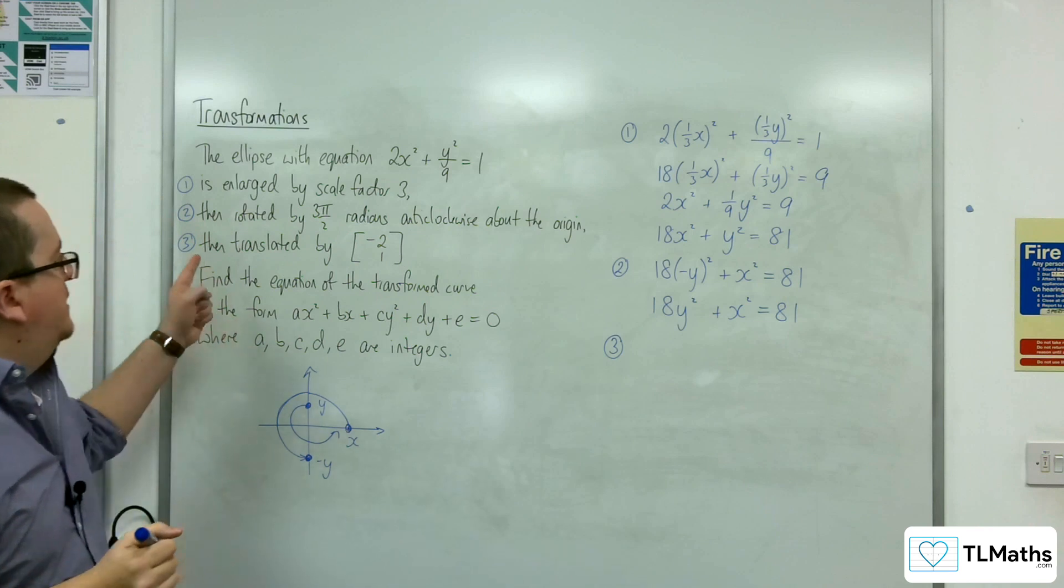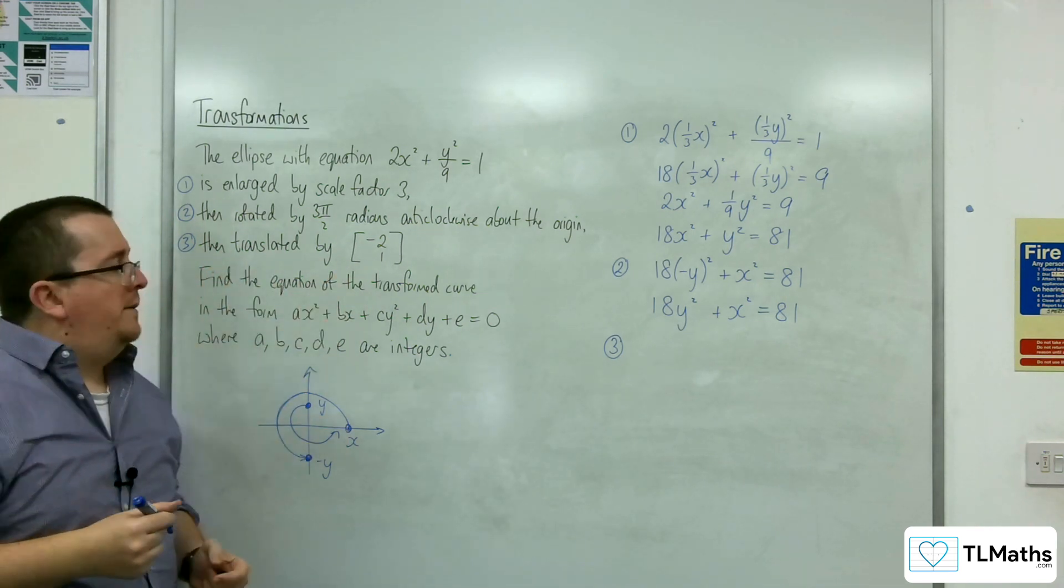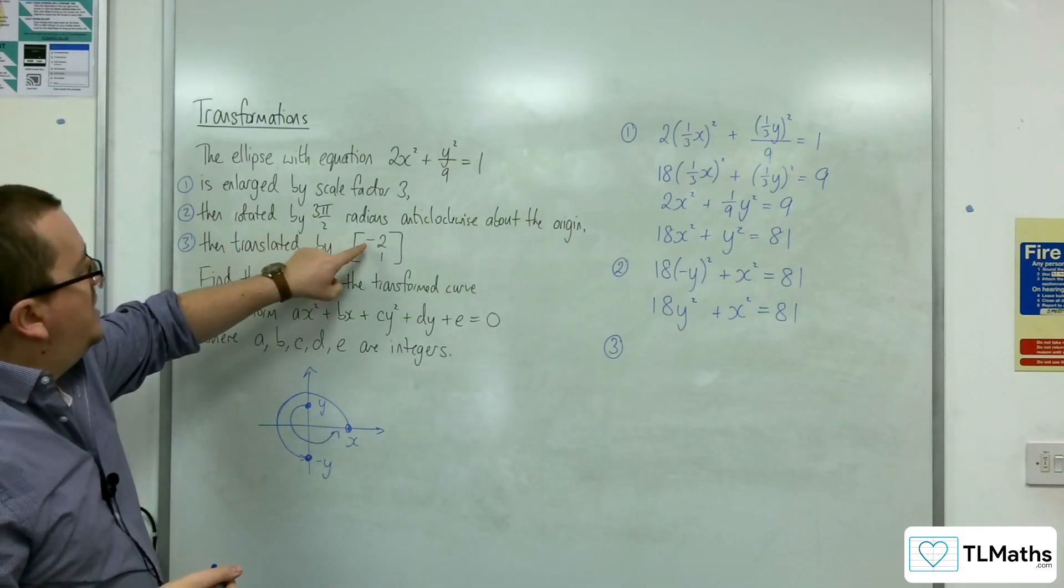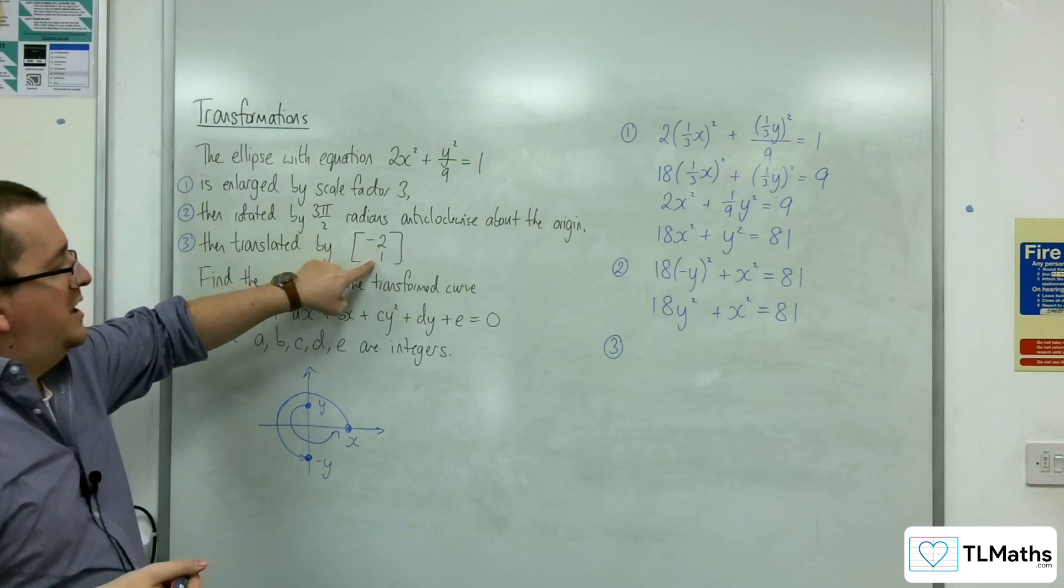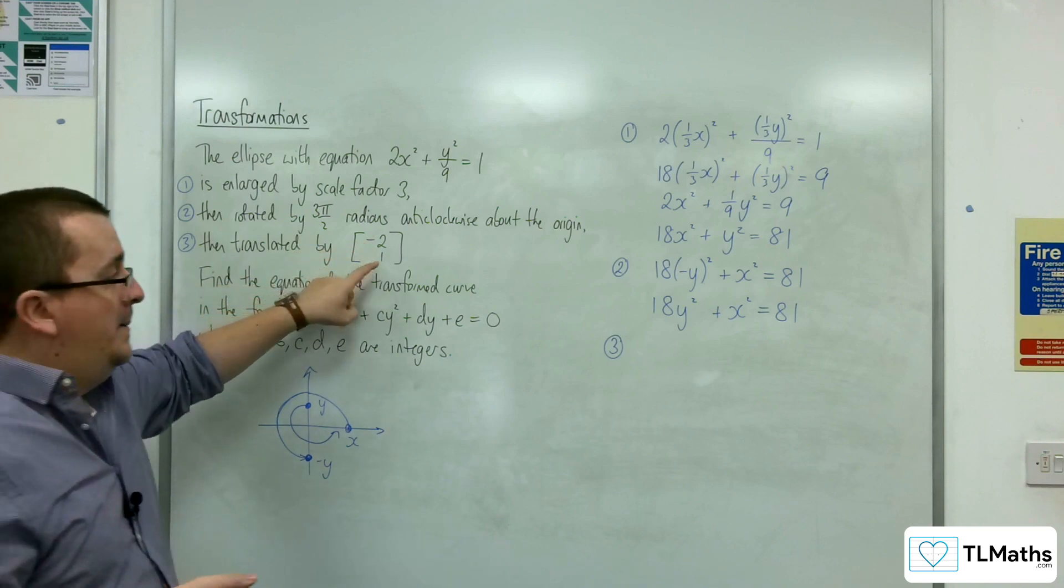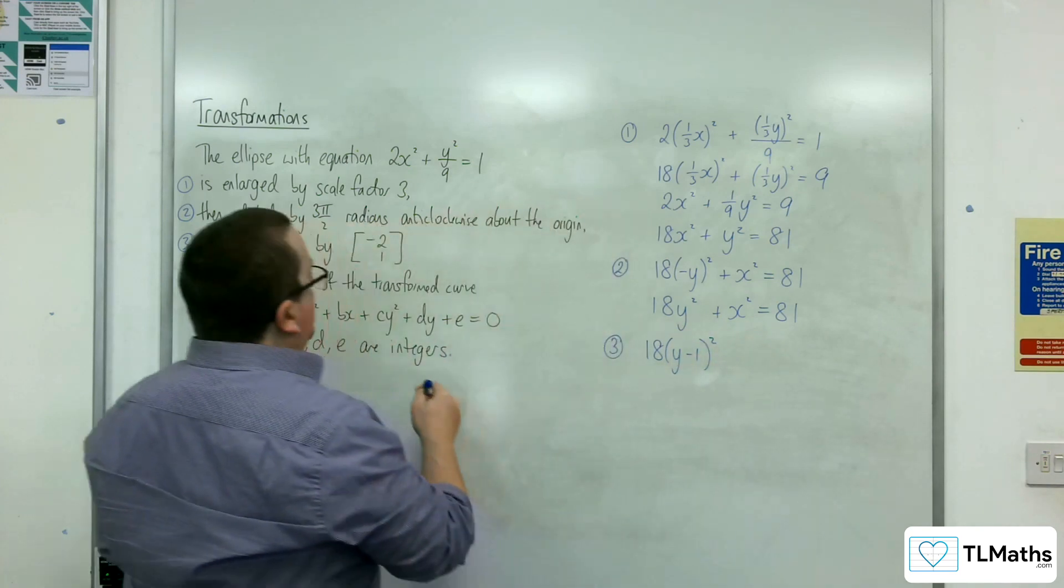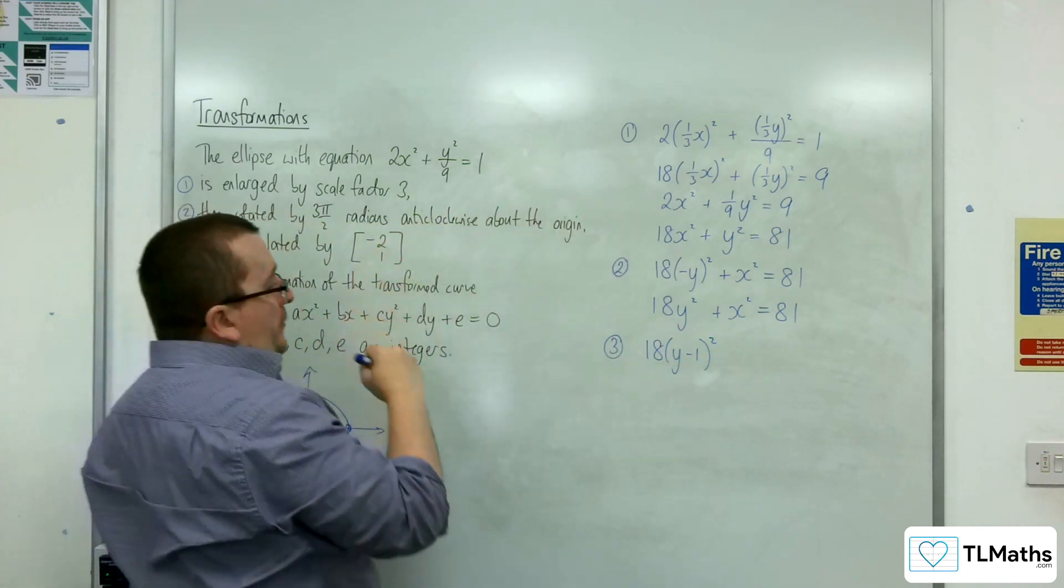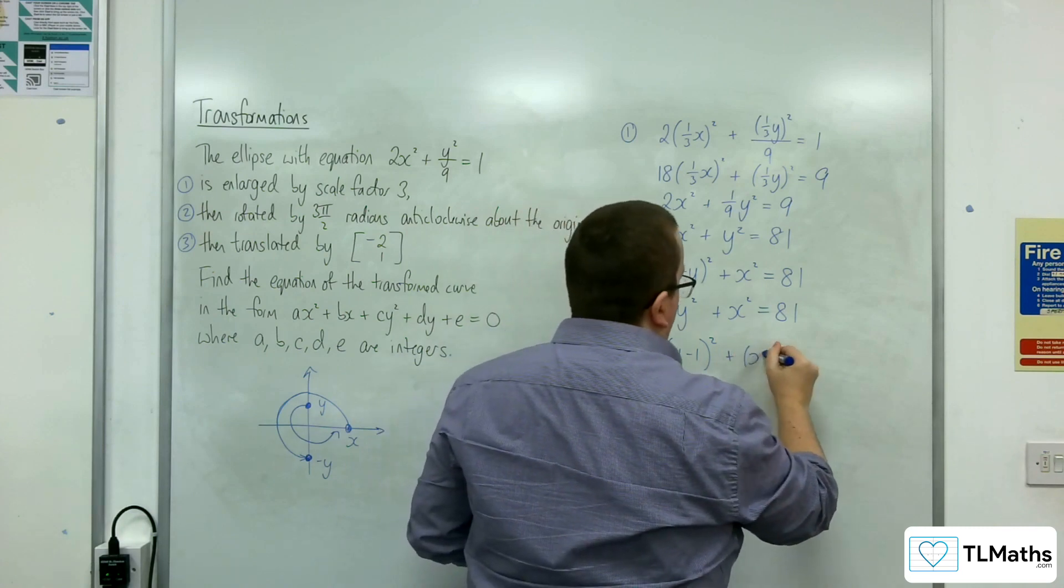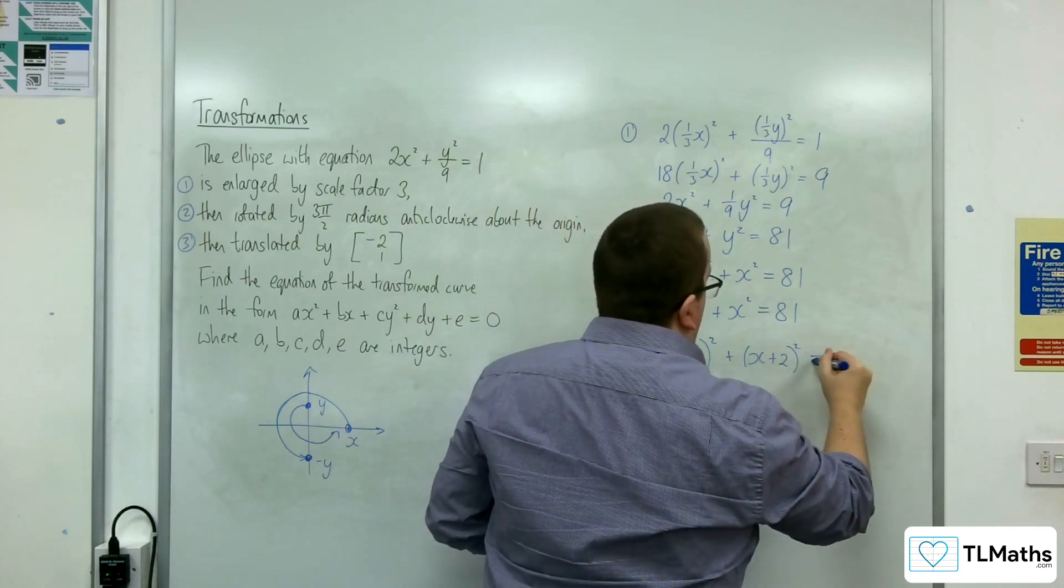Transformation number 3 is a translation by the vector minus 2, 1. So the x is going to be replaced with x plus 2, and the y is going to be replaced with y minus 1. So 18 lots of y minus 1 squared plus x plus 2 all squared equals 81.